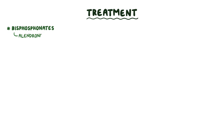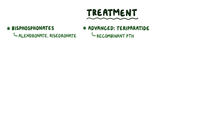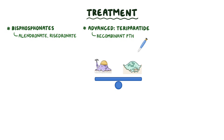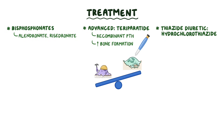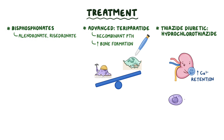Treatment for osteoporosis usually relies on bisphosphonate drugs like alendronate and risedronate. If osteoporosis is really advanced, teriparatide, a recombinant parathyroid hormone, can be used. Even though parathyroid hormone stimulates bone resorption, intermittent injections with teriparatide activate osteoblasts more than osteoclasts, therefore increasing bone formation. A thiazide diuretic like hydrochlorothiazide can also be used, as it boosts calcium retention in the kidney and directly stimulates osteoblast differentiation, decreasing mineral bone loss.